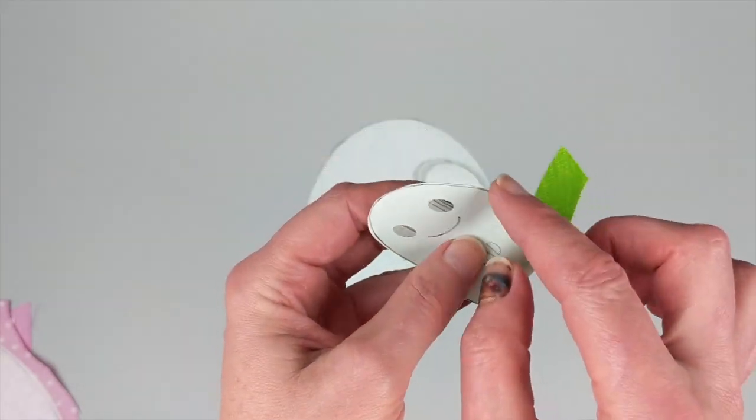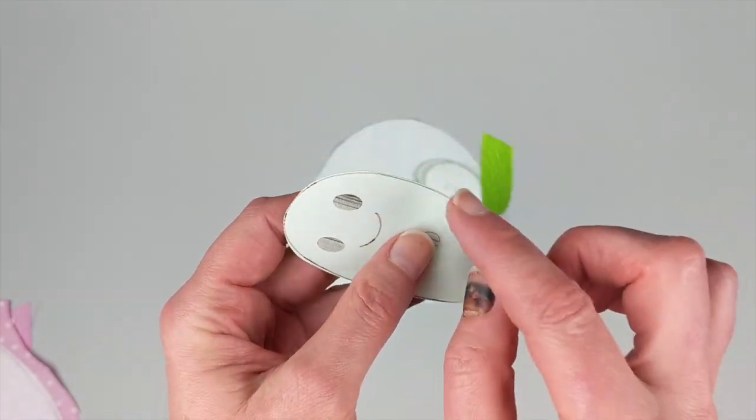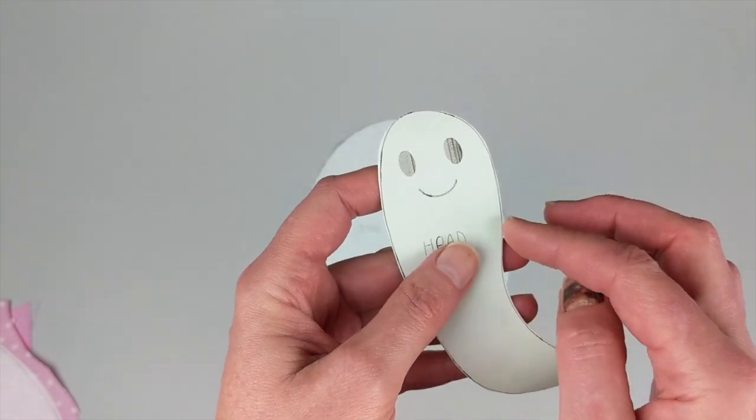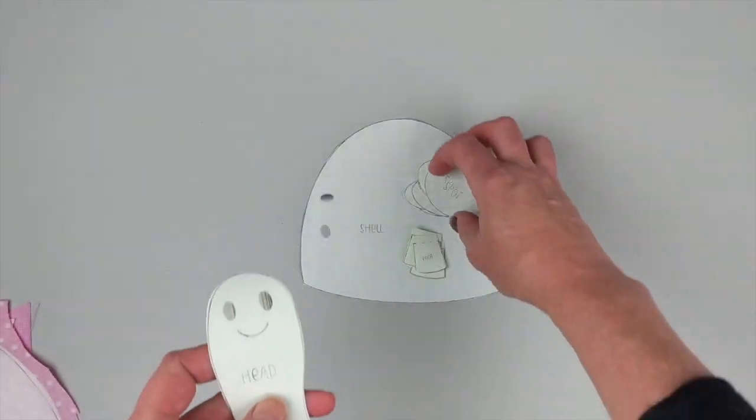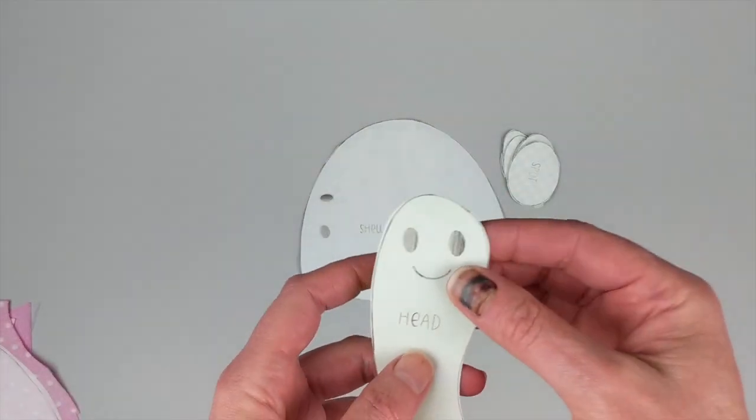If you tried to cut out the fabric and then fuse it down and then cut it out again, you would leave some little threads. Even if it's just a thread width, it's going to tend to fray a little bit.